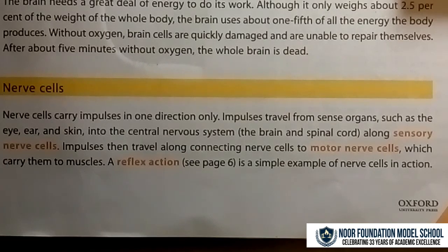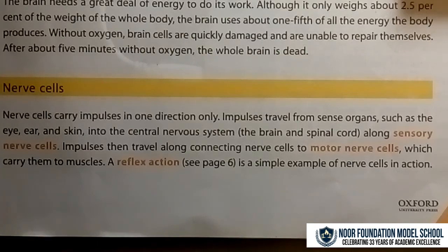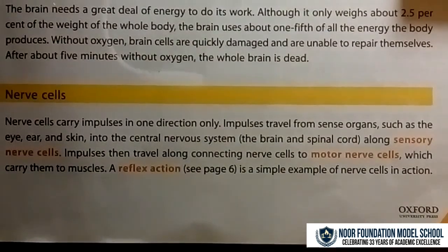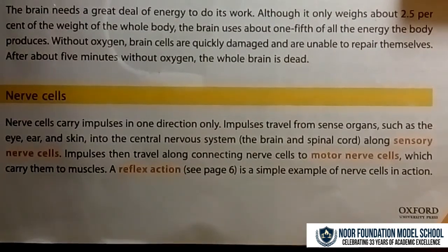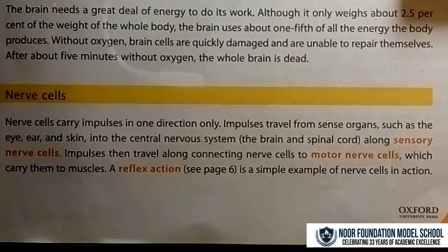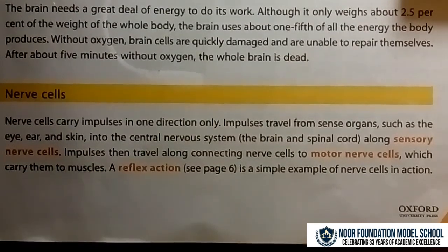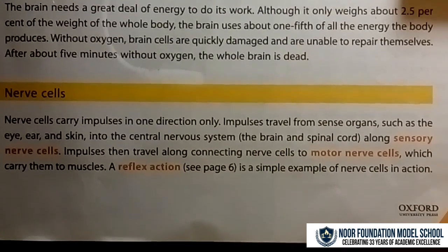A reflex action is a simple example of nerve cells in action. Its diagram is shown on page 6. Impulses are basically a certain desire to act. To summarize: nerve cells carry impulses in one direction only, and those impulses travel from sense organs to the central nervous system along the sensory nerve cells.